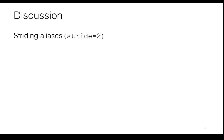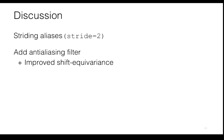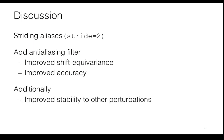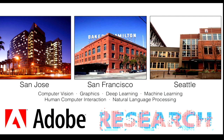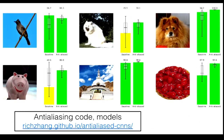If you have the line 'stride equals 2' anywhere in your code, you're probably aliased right now. The proposal is simple: add an anti-aliasing filter. In the classification setting we get improved shift equivariance as expected, and also improved accuracy. Additional studies show it also makes the network more stable to other perturbations such as rotations, and can improve robustness to noise as well. I'm here from Adobe — we take interns. Thank you very much.